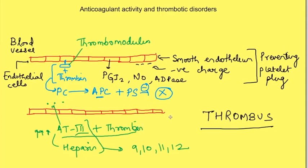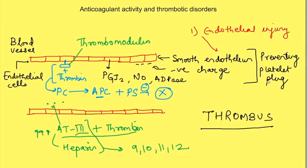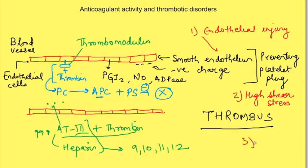By knowing this, we can predict when thrombus formation may occur. First, when there is excessive endothelial injury. Second, we know that the stimulus for platelet aggregation is high shear stress, so high shear stress leads to platelet plug formation. Third, stasis of blood also leads to thrombus formation because it prevents washout of platelets and coagulation factors from that particular site.